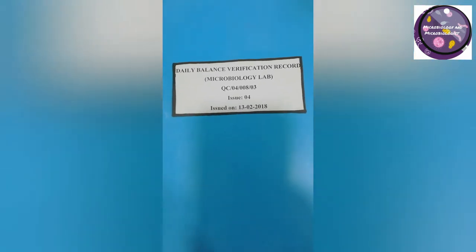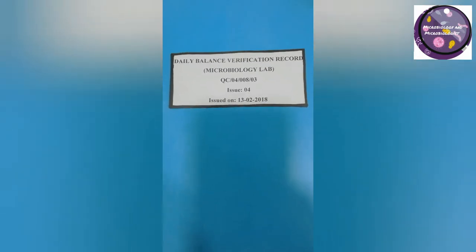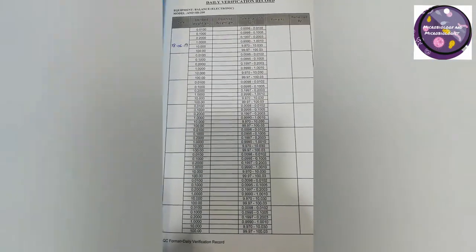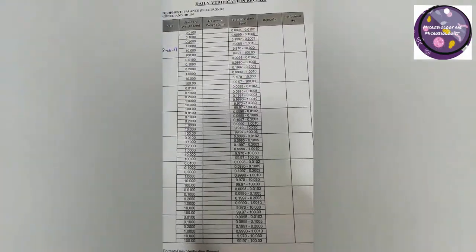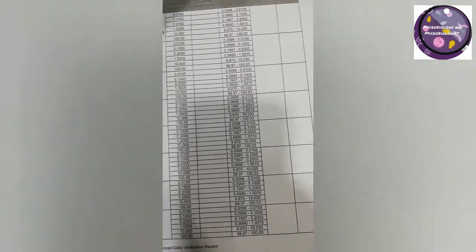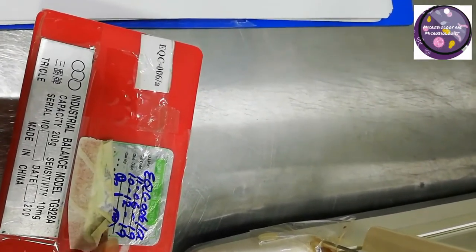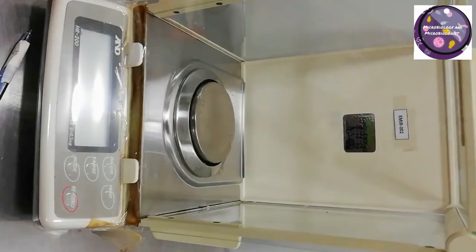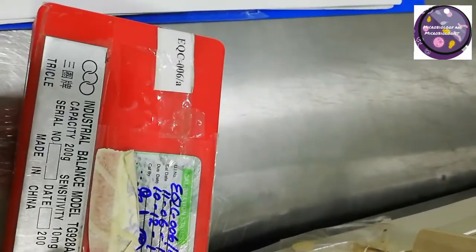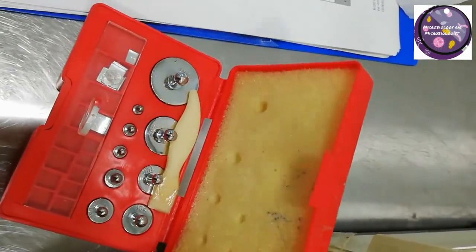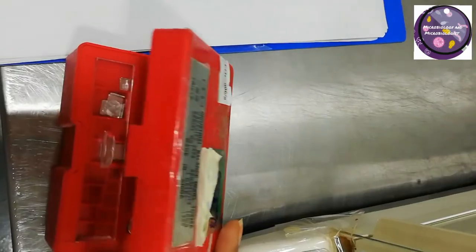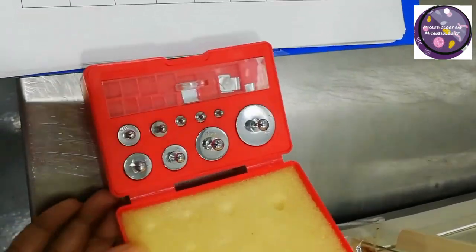After doing work on the autoclave, incubators, laminar airflow hoods, or weighing balance, log books and data must be maintained. Thank you for watching this part one of three. We will share the other parts too, with some details about the equipment of the microbiology lab.